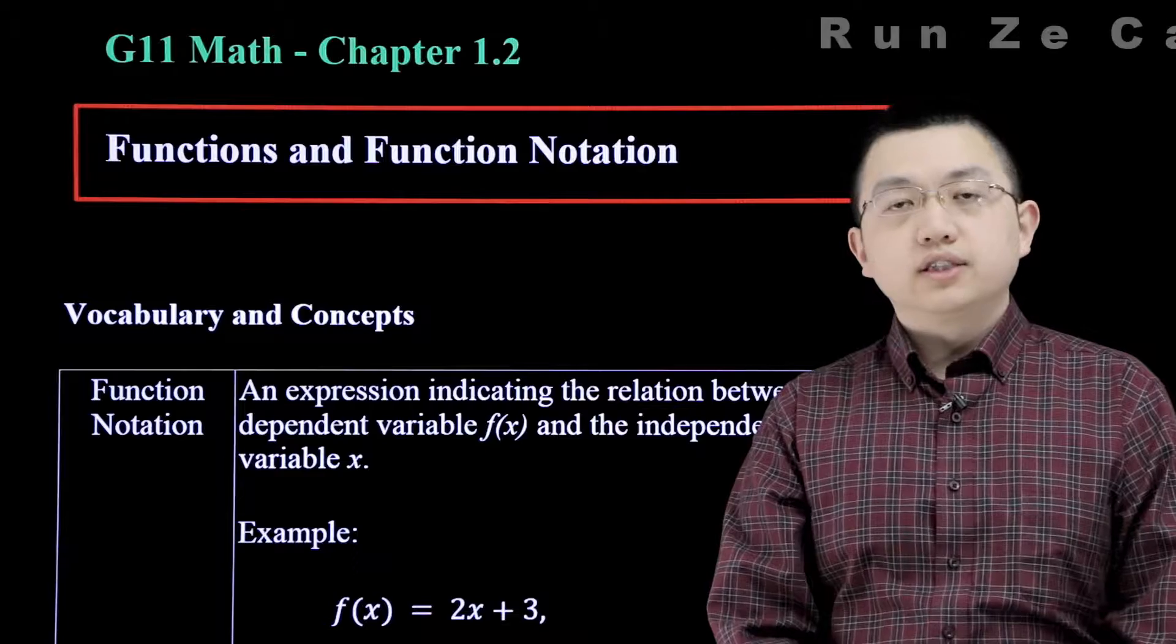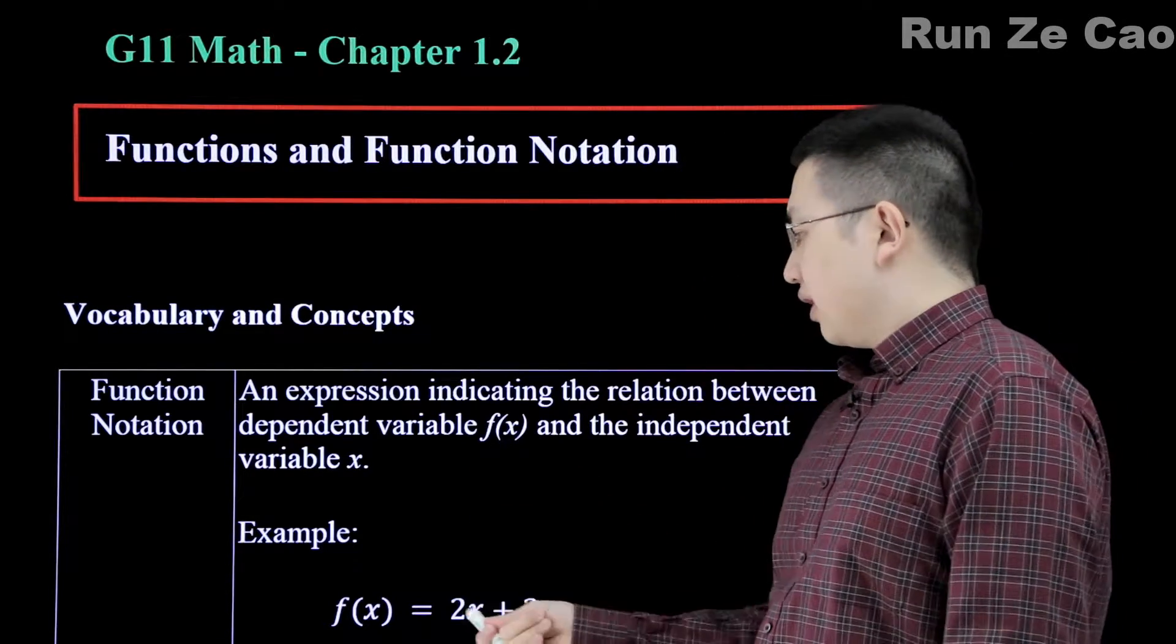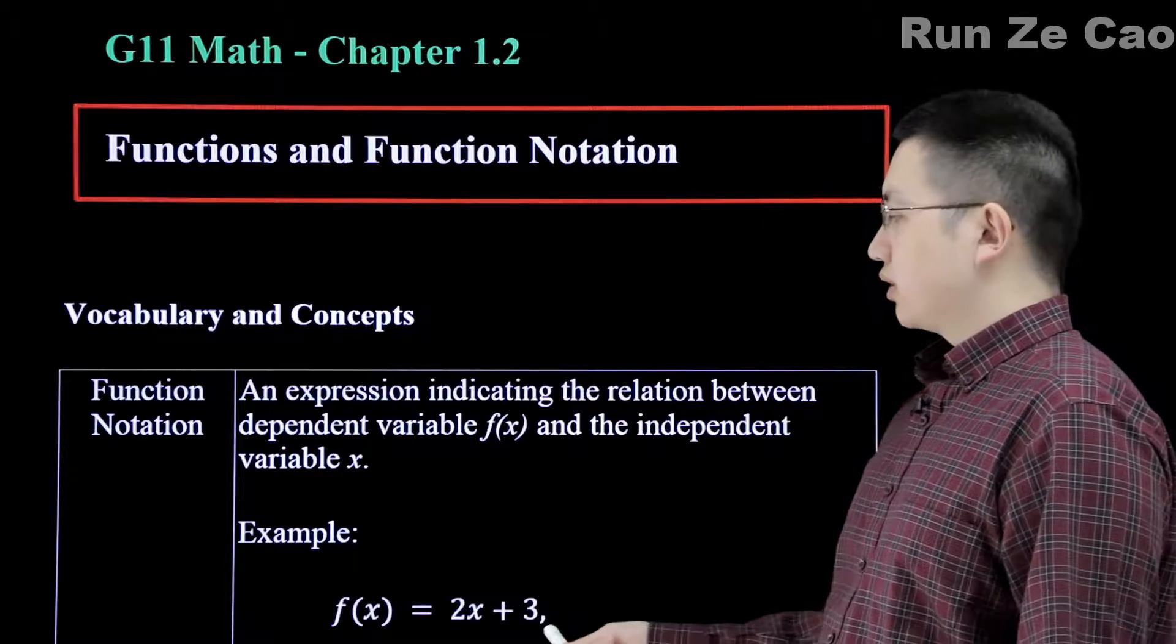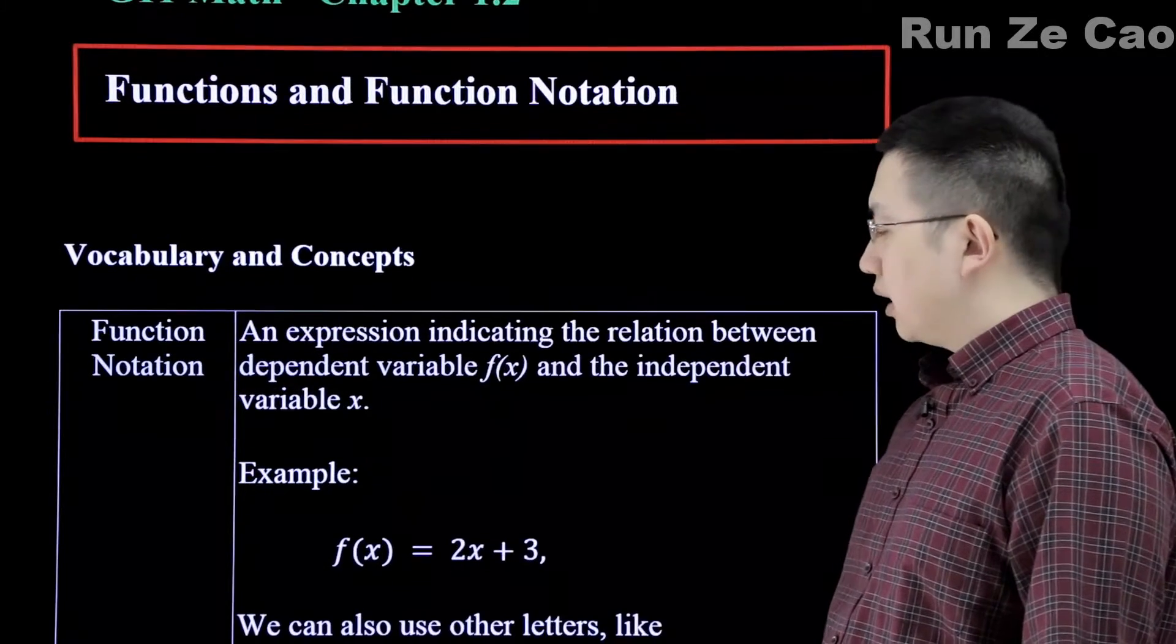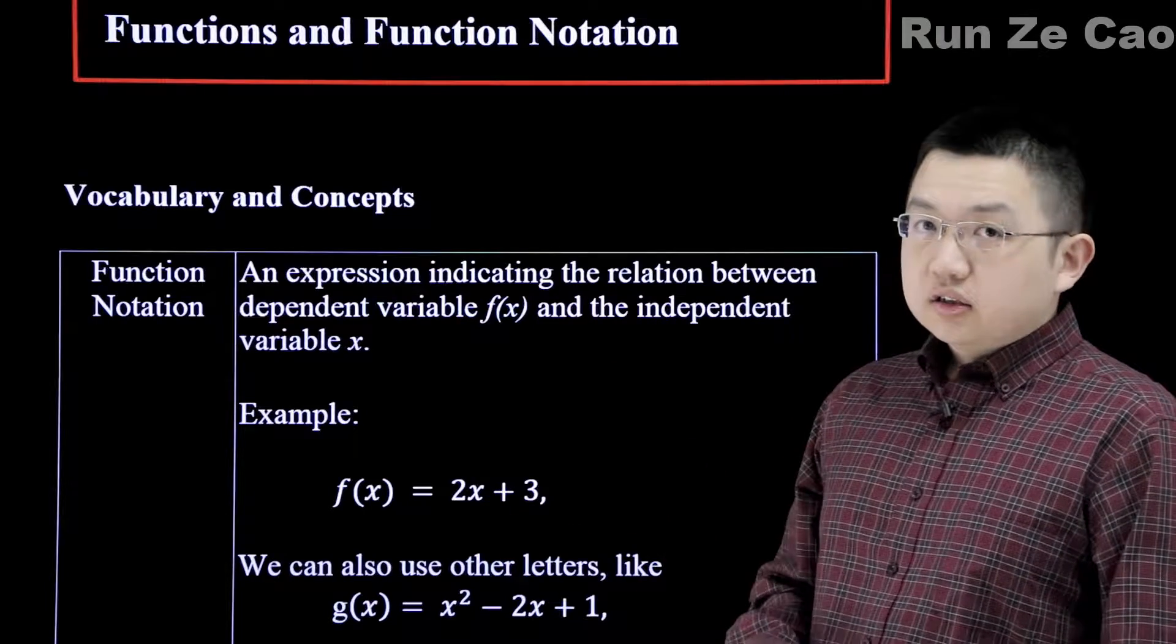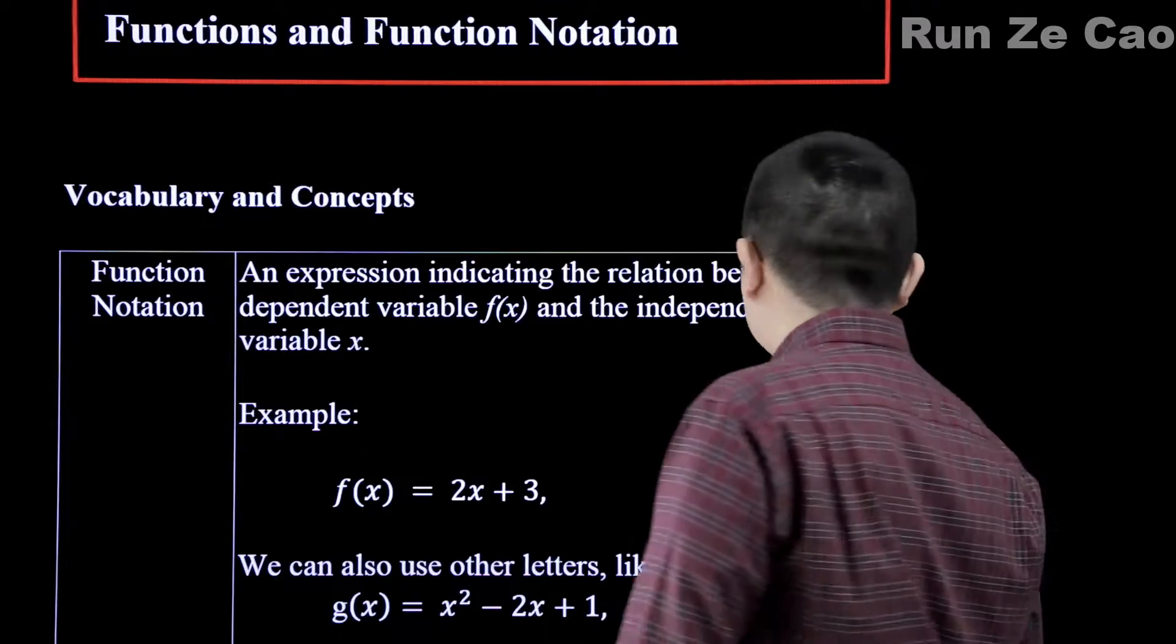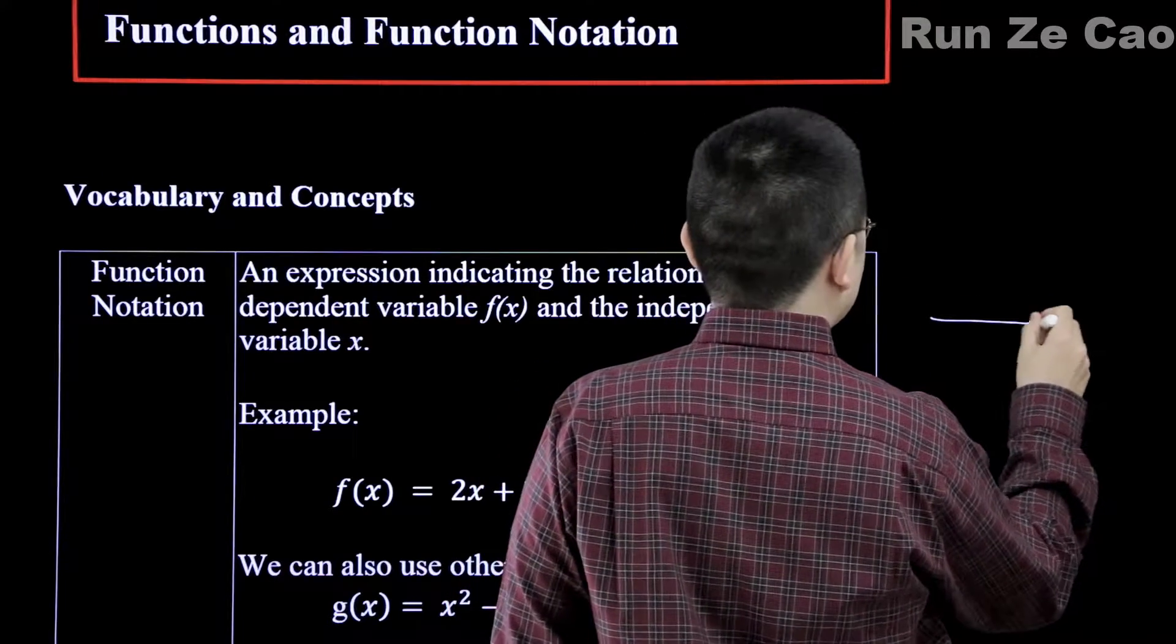Functions have their own notation system. f(x) is equal to some function of x. Now, f(x) here, if we graph this, we label the axes appropriately.